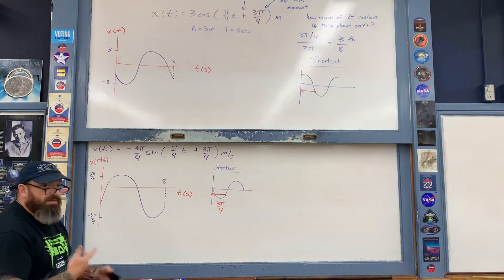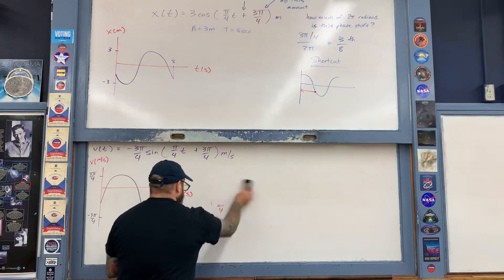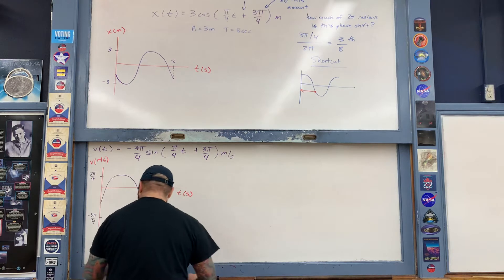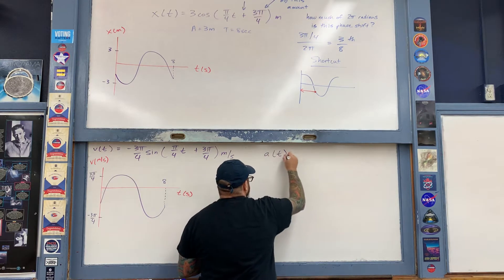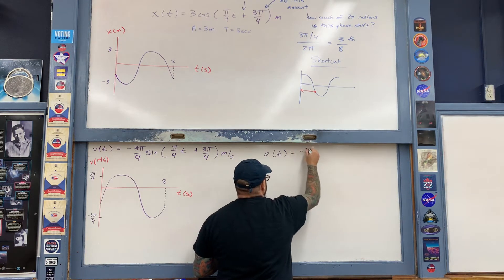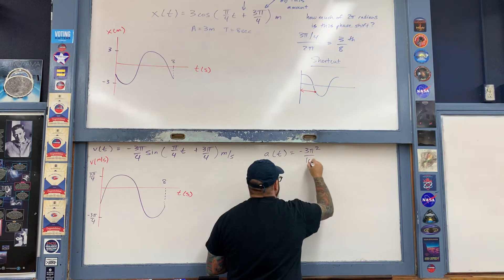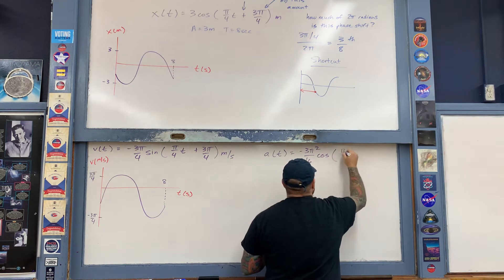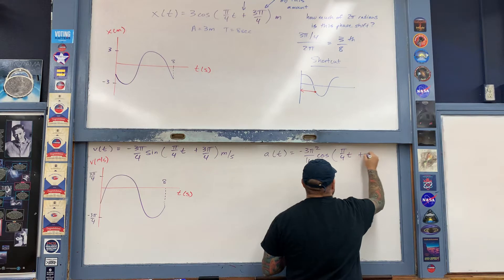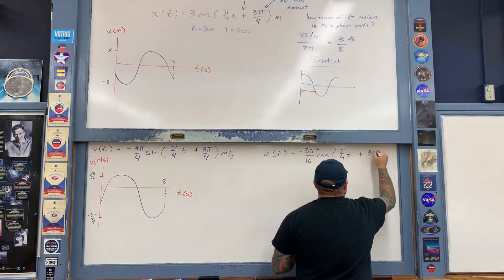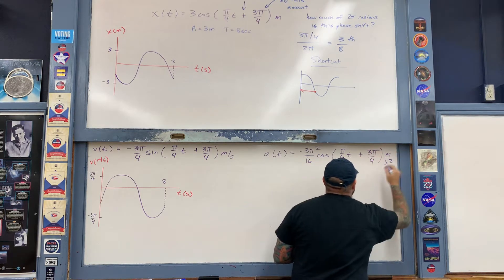Now for the acceleration graph — take another derivative, which gives the acceleration function in meters per second squared.